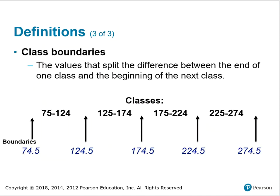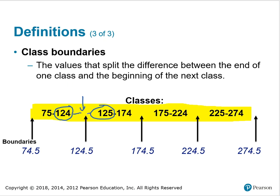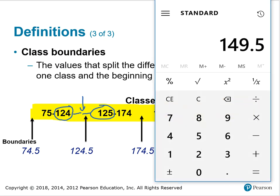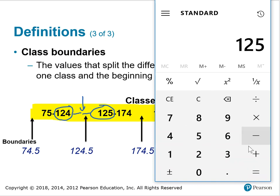Class boundaries are the values that split the difference between the end of one class and the beginning of the next class. Using the same four classes, class boundaries are found by adding an upper class limit of one class with the lower class limit of the adjacent class and dividing by 2 — the halfway point between them. Adding 124 and 125 and dividing by 2, the class boundary is 124.5.